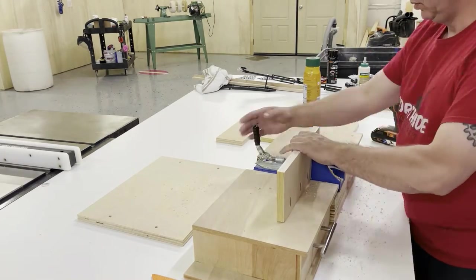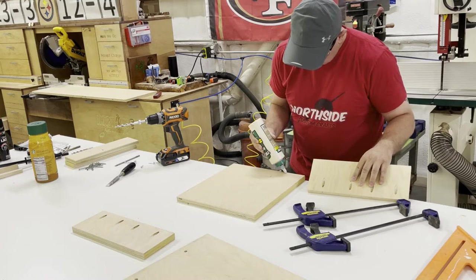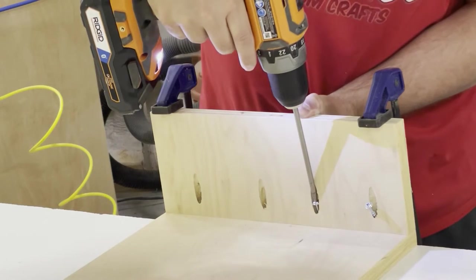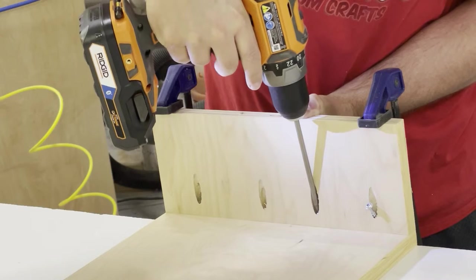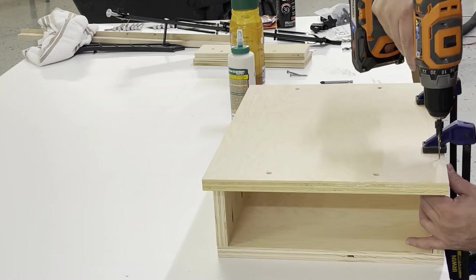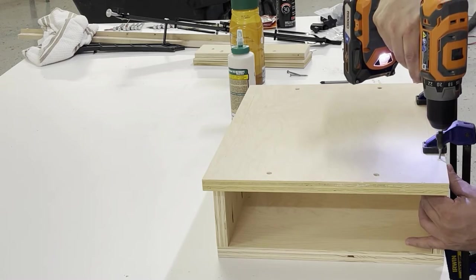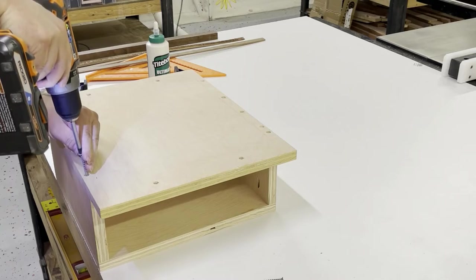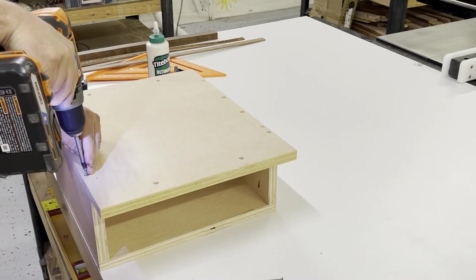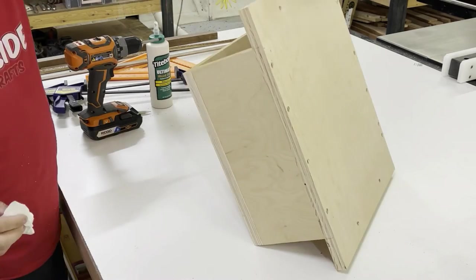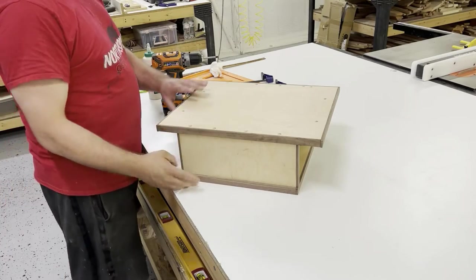After that I went ahead and used pocket holes to attach the sides to the bottom. Then I drilled and countersunk and screwed the top onto that. After that I had some walnut left over from cutting board, so boom, walnut.